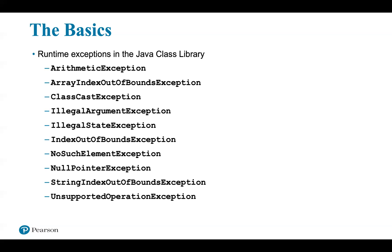Runtime exceptions are the result of a logical error in the program. For example, an out-of-bounds array index causes an exception of the class ArrayIndexOutOfBoundsException, and a division by zero causes an ArithmeticException. Although we could add code to handle a runtime exception, we usually just need to fix the mistakes in our program. All classes of runtime exceptions are subclasses of RuntimeException, which is a descendant of Exception.